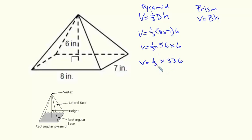So now what I'm going to do is multiply one-third times 336. Multiplying by one-third is the same as dividing by 3, so 336 divided by 3 is going to give me 112.